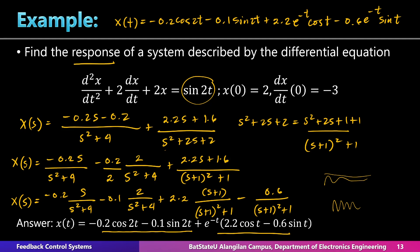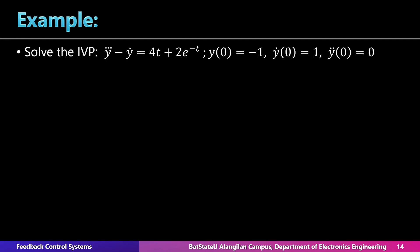Let us solve the last and final example. Solve the initial value problem where the third derivative minus the first derivative equals 4t + 2e^(−t). The system has two inputs: a power function (4t) and an exponential function (2e^(−t)). We will again use the Laplace transform method.